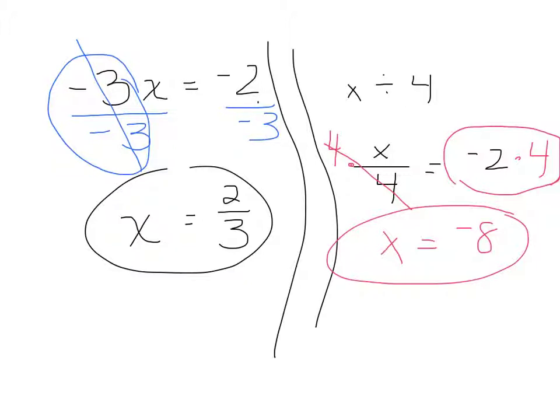and then doing the opposite operation? So if it's multiplication, it's division. If it's division, it's multiplication. If you're adding something, then you're going to subtract. If you're subtracting something, you're going to add.